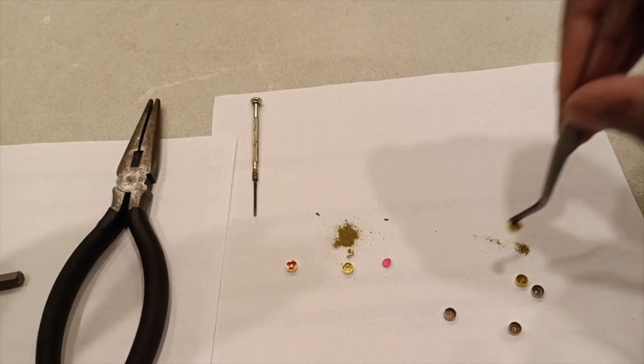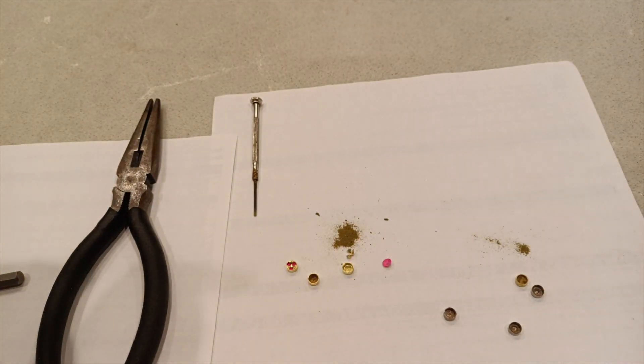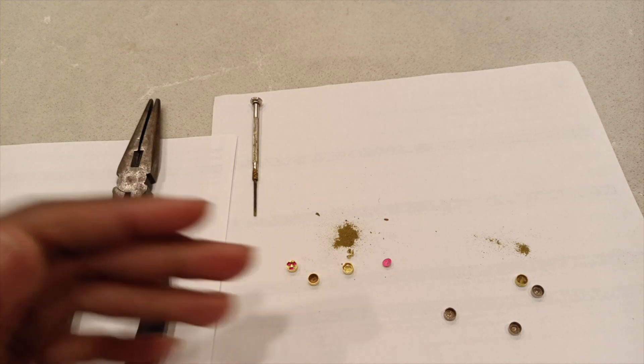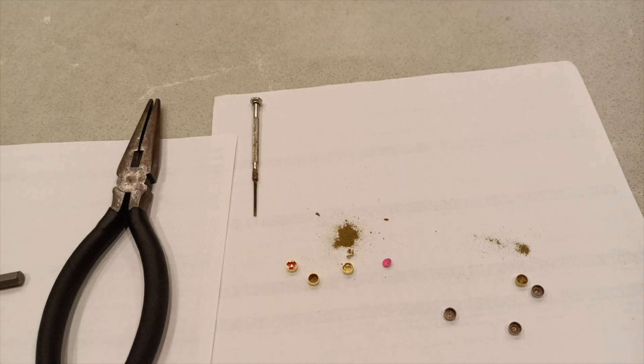If you're using other primers, other companies like CCI, I think is the same as this, but federal might use a mushy compound. I think I tried to take one federal primer apart and the compound was a little bit mushy. So it depends what kind of primers you use. But when using CAMPRO this is what it looks like right here.